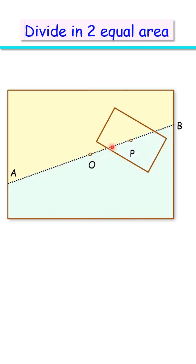The line AB is also passing through the center of the cutout rectangle, so it divides the cutout into two equal areas as well. We can say the yellow area equals the green area. Thus AB is the line segment which divides the sheet into equal areas, and that's our answer.